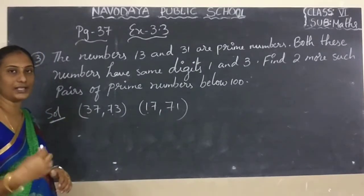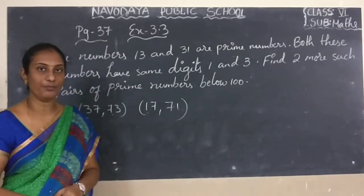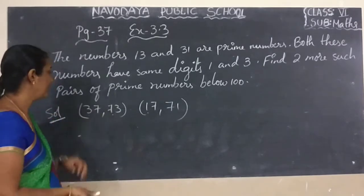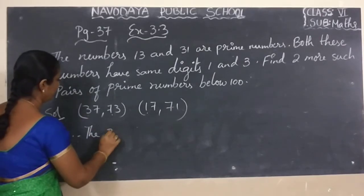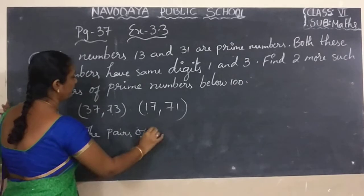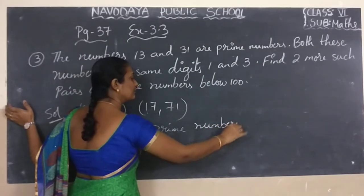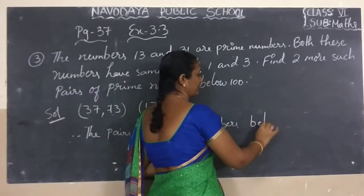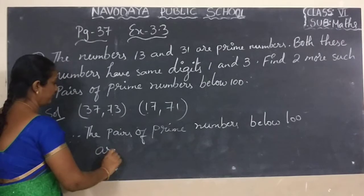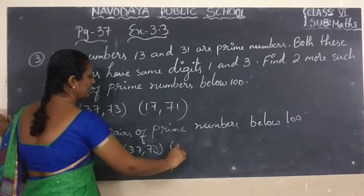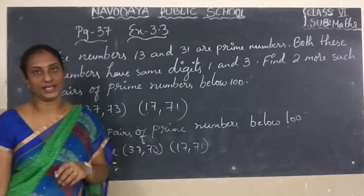Like this, we have to take some more examples. You have to take some more examples and write. Therefore, the pairs of prime numbers below 100 are 37 and 73, and 17 and 71. Okay children, do you understand? Now we will see the next question.